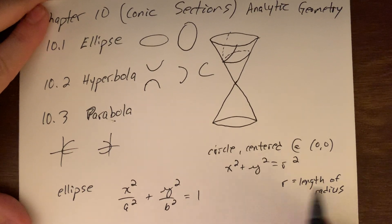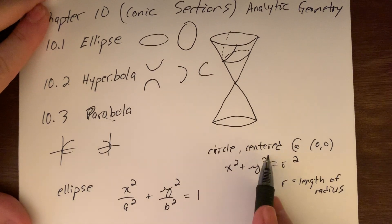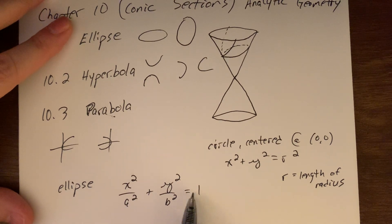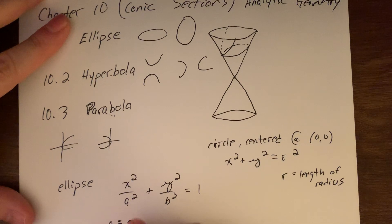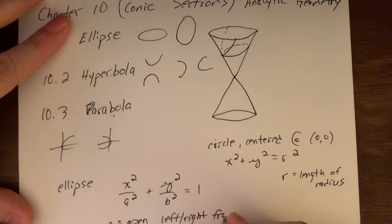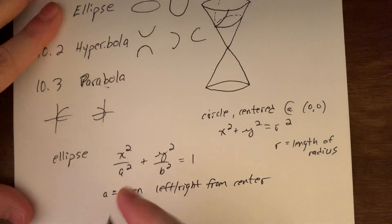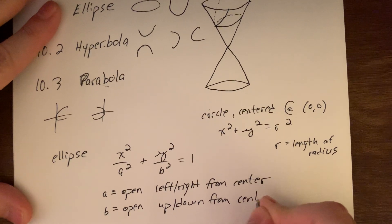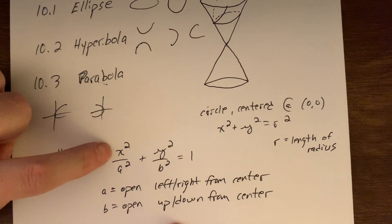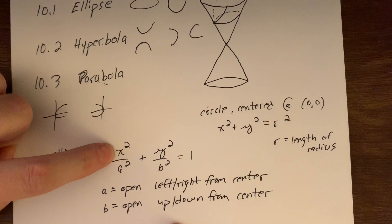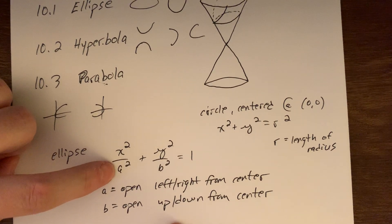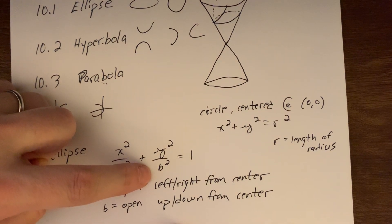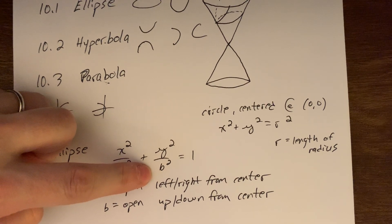Notice that just like the circle, r is squared but we talk about r as the length of the radius — how far to the left, right, up, down from our center. When we have an ellipse with this notation, I'm going to use a as how far we open left and right from our center, and b as how far we open up and down from our center. The idea is to connect a to x (the left-right variable) and b to y (the up-down variable).